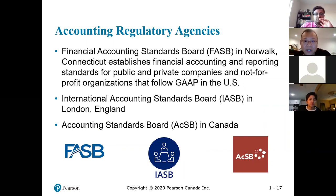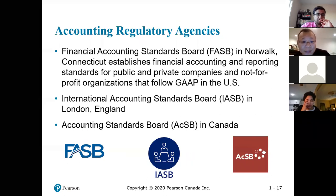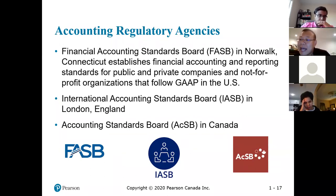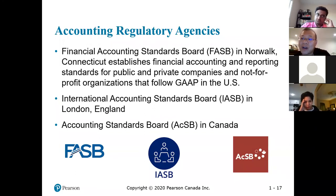There are different standard boards. For U.S. GAAP, the board is called the Financial Accounting Standards Board — FASB. The U.S. GAAP is different from IFRS. For international standards, the International Accounting Standards Board is based in London, England — this board is responsible for IFRS, which we are studying in this course. And in Canada, we have the Accounting Standards Board.